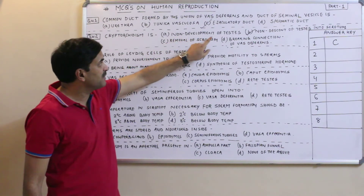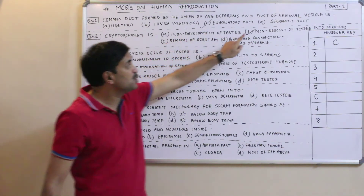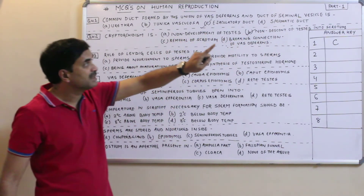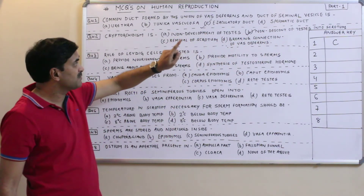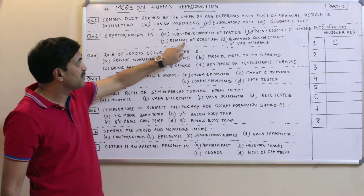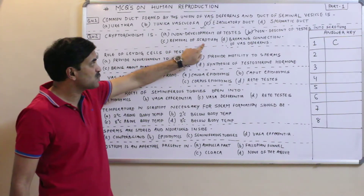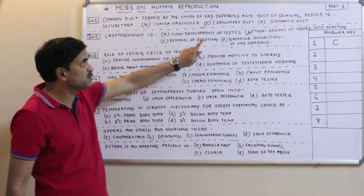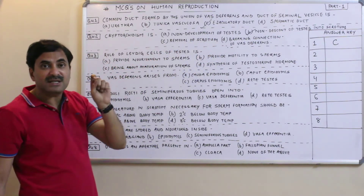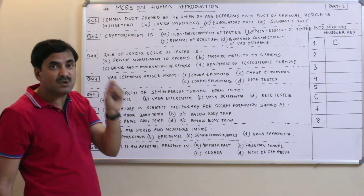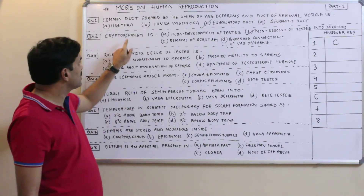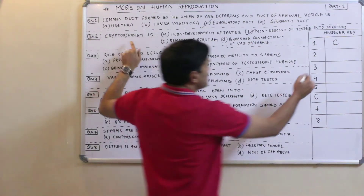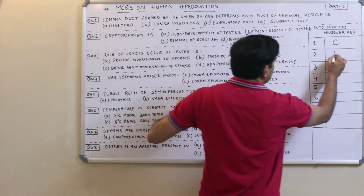The options were: non-development of testes (no), non-descension of testes into scrotum sac (yes), removal of scrotum (no), and breaking connection of epididymis (no). When testes are not able to descend down into the scrotum sac, the disorder is called cryptorchidism. So the answer is B.